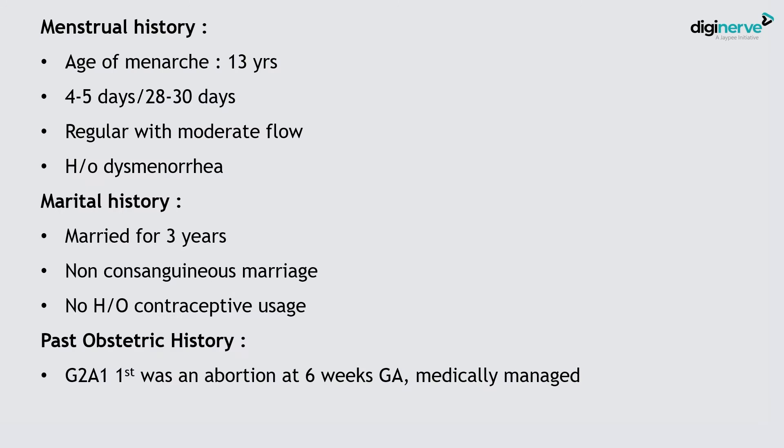Marital history: married for three years, non-consanguineous marriage, no history of contraceptive usage. Contraceptive history is very important in relation to ectopic: IUCDs, particularly progesterone-containing devices, are associated with ectopic. The advantage of Mirena over progesterone-only devices is that the incidence of ectopic pregnancies is less. Copper T has also been mentioned. Sterilization failure depends on the time and method: bipolar cautery increases ectopic risk more than monopolar because monopolar damages the tubes more extensively.